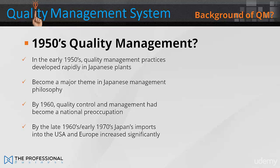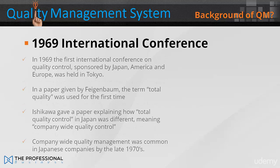In the early 1950s, quality management practices developed rapidly in Japanese plants, and it became a major theme in Japanese management philosophy, such that by 1960, quality control and management had become a national preoccupation. By the late 1960s and early 1970s, Japan's exports to the USA and Europe increased significantly due to its cheaper, higher quality products compared to Western counterparts. In 1969, the first international conference on quality control, sponsored by Japan, America and Europe, was held in Tokyo.